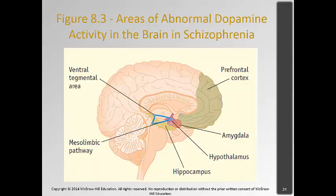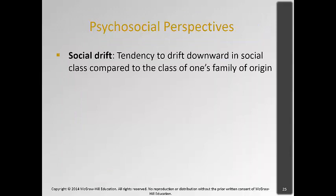From this diagram, you can see the prefrontal cortex and the mesolimbic pathways — all areas of the brain where researchers are seeing differences in individuals with schizophrenia compared to normal controls. There's also a psychosocial perspective of social drift, the tendency to drift downward in social class for individuals with schizophrenia, which increases stress.